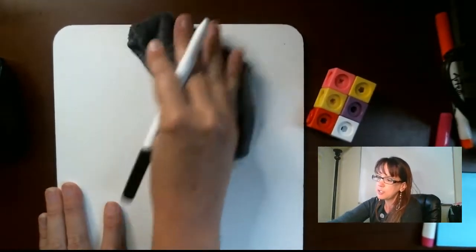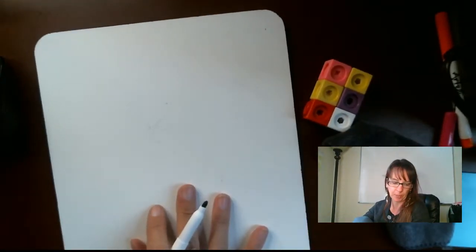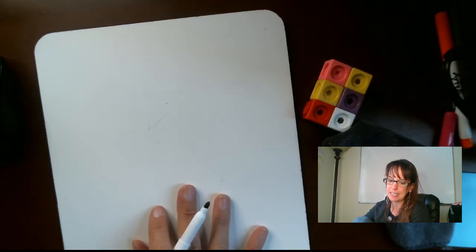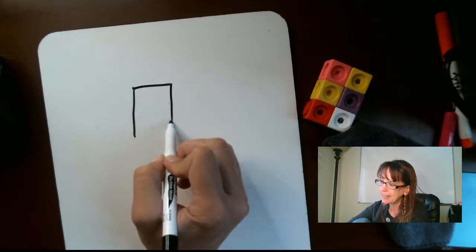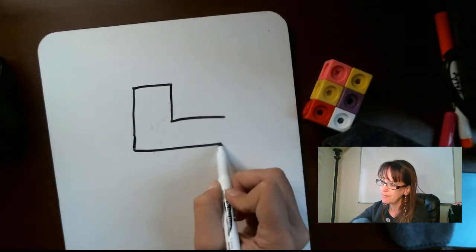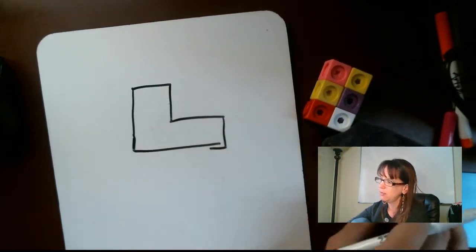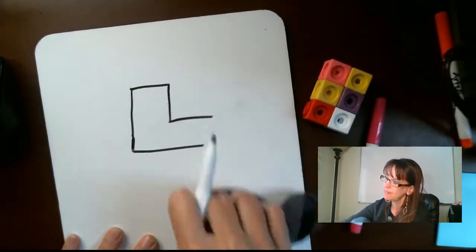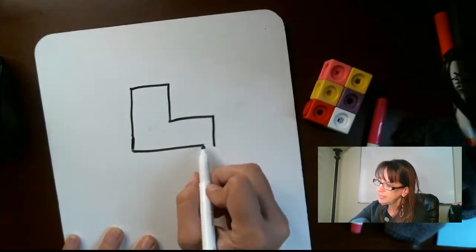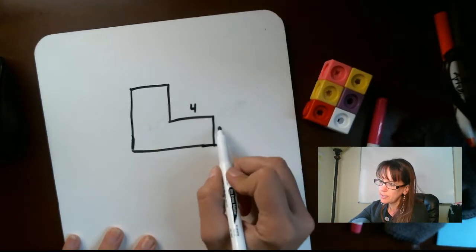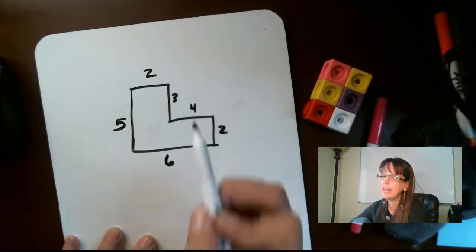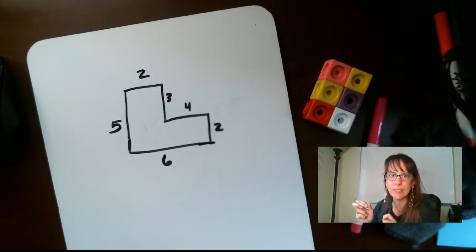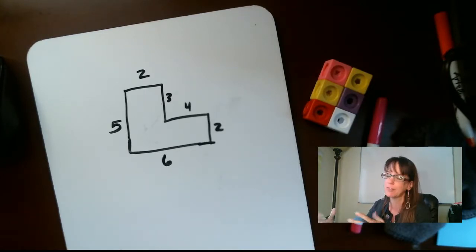Let's do some practice problems from the book. If you're following along, I'm on page 37, and Example 8.1 looks like this. The dimensions are: 4, 2, 6, 5, 2, and 3. There are two different ways to find the area of this figure.